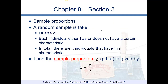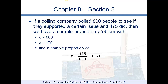For sample proportions, a random sample of size n is taken. Each individual in the population either has or does not have a certain characteristic. In total, there are x individuals that have the characteristic we are looking for. So the sample proportion, which we call p-hat, is given by x divided by n. For example, if a polling company polled 800 people and 475 supported a certain issue, then n is 800, x is 475, and p-hat is 475 divided by 800, which equals 59%.